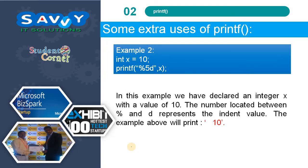In a second example, x equal to 10 and printing with %5d x. We have declared an integer x with a value of 10. The number located between % and d represents the indent width value, so %5d gives some empty leading space before printing the number. Thank you.